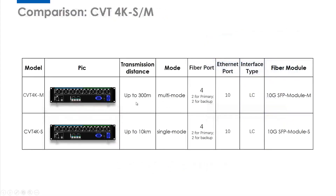Here is a comparison between CVT4K-M and CVT4K-S. For the CVT4K fiber converter, it has two models. The main difference between them is the transmission distance. The CVT4K-M's transmission distance is up to 300 meters, and for CVT4K-S, its transmission distance is up to 10 kilometers. CVT4K-M is multi-mode and CVT4K-S is single mode. The fiber ports and Ethernet port quantity are the same, and here is the fiber module for reference.